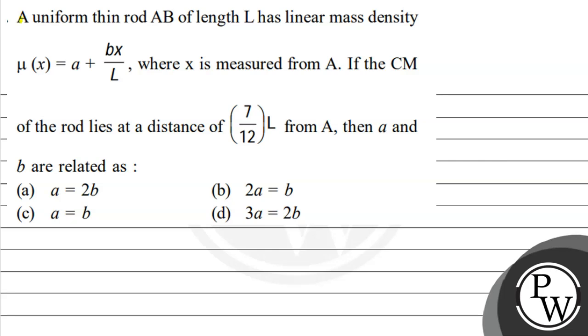Hello, let's read our question first. A uniform thin rod AB of length L has a linear mass density of mu x equals a plus bx by L, where x is measured from A. If the center of mass of the rod lies at a distance of 7 by 12 of L from A, then a and b are related as.